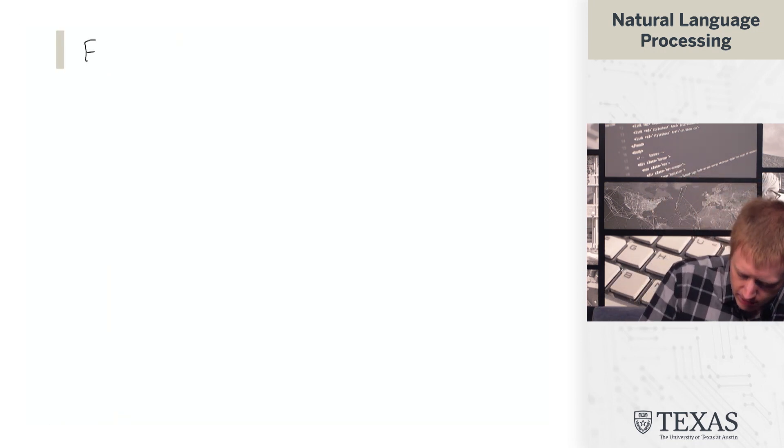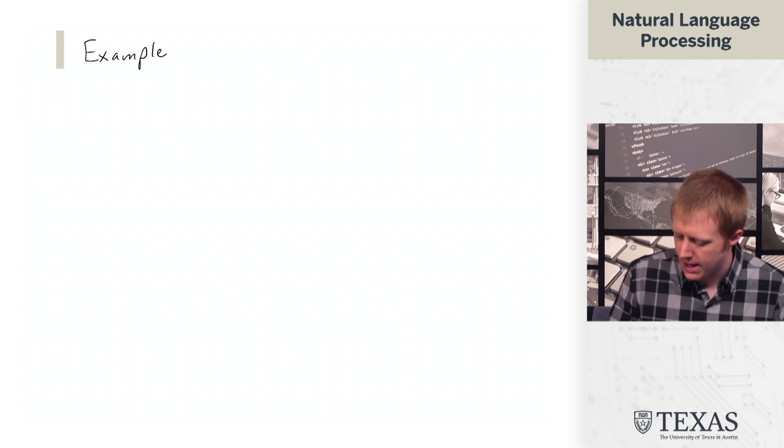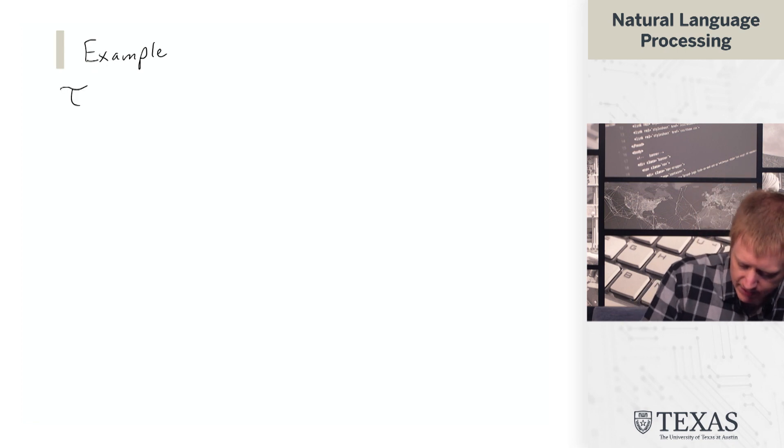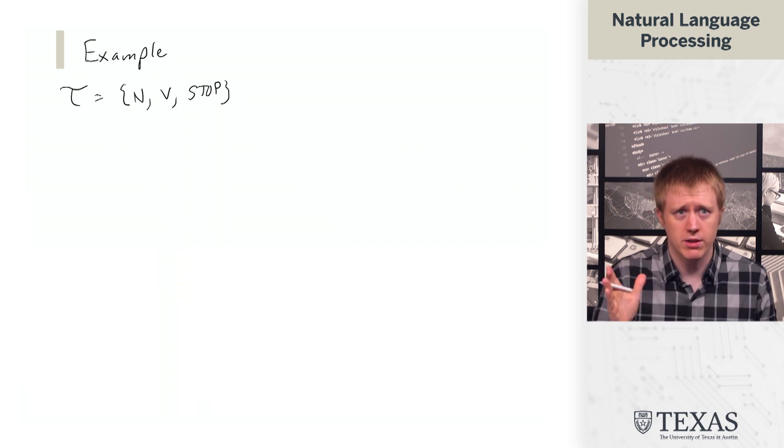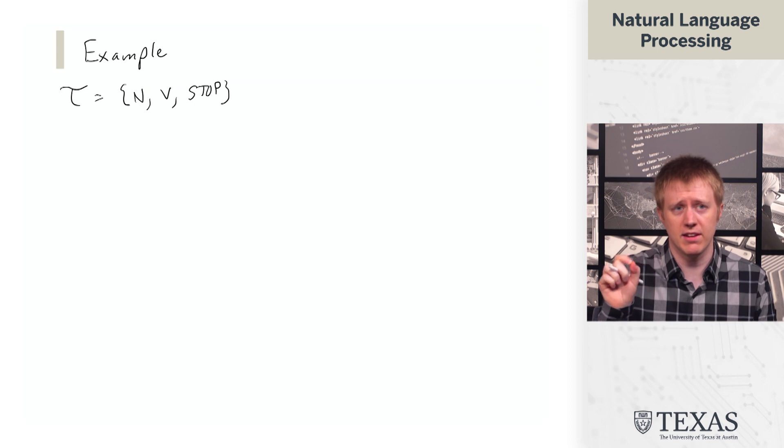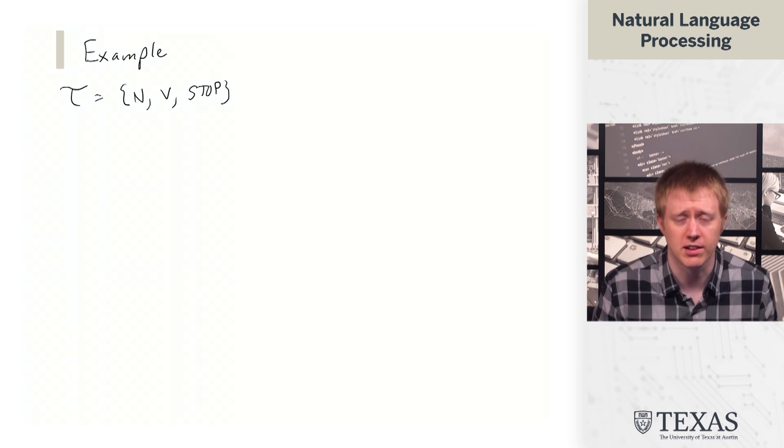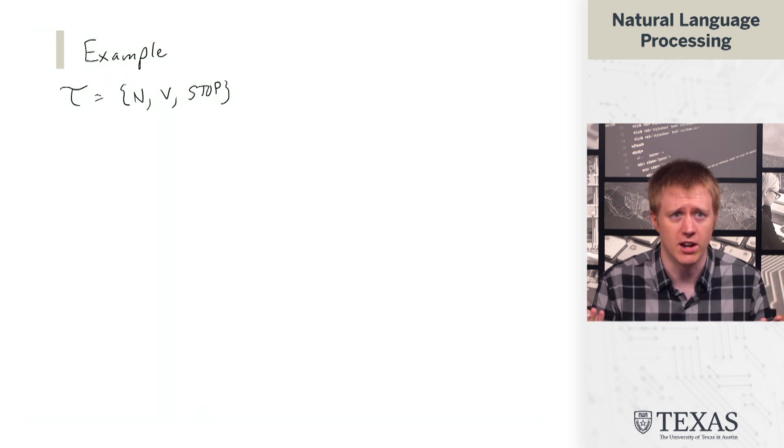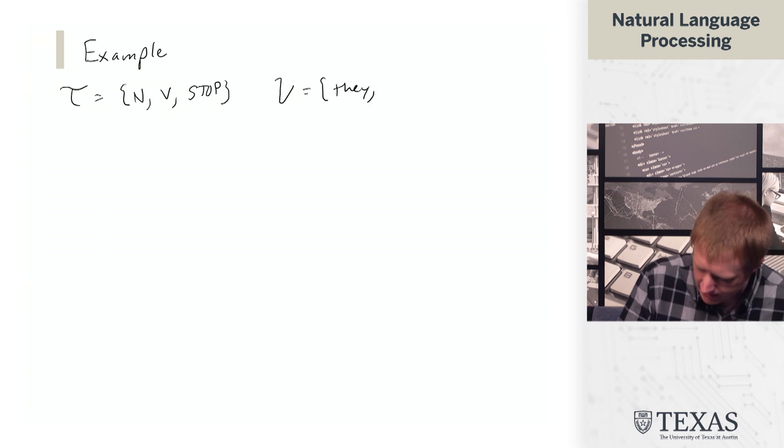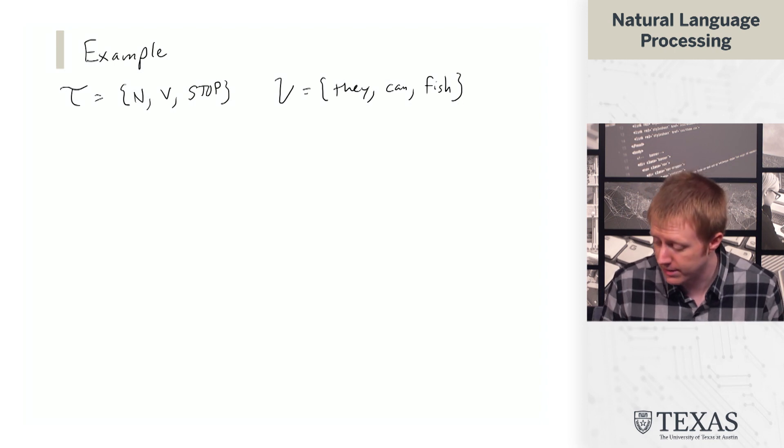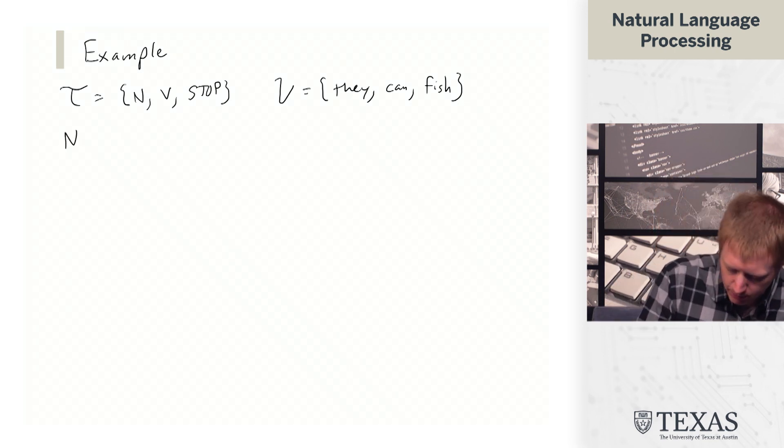So let's get that gnarly looking likelihood thing out of here. And we can look at an example and see how this works. So the tags, we're going to use a simplified tag set with three tags: noun, verb, and stop. So what I showed in the initial definition of the HMM is that at a certain point when we get to the end of the sequence, we have to transition to the stop tag, and that's what's going to tell us that the sentence is done. And our vocabulary is they can fish. So all these they can fish examples are taken from the Jacob Eisenstein book. It's a nice, simple example to deal with here. And so let's say our data is the following.